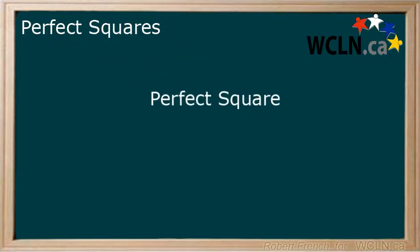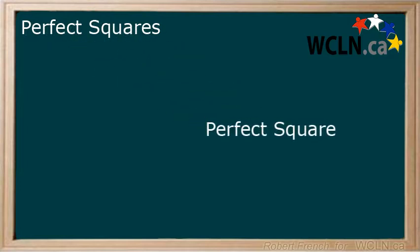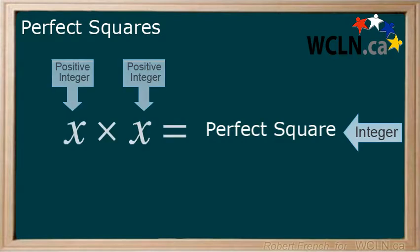In this tutorial we will be looking at perfect squares. Perfect squares are an integer that can be expressed as the product of two equal positive integers. Based on this, can you guess what the connection to exponents is?